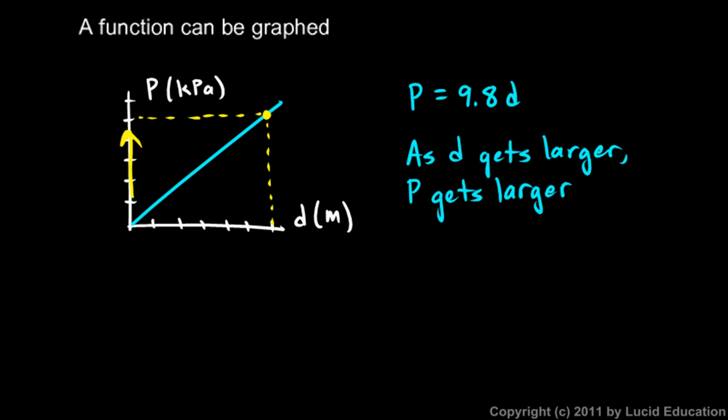Clearly, if we put in a bigger number for d, when we do this calculation we get out a bigger number for P. And we also see that over here: as we go to the right, these would be larger values for d over here to the right. Those larger values for d would correspond to larger values for P further up on the axis there. So P is related to d—pressure is related to depth.